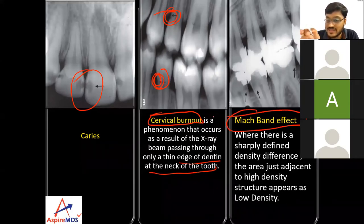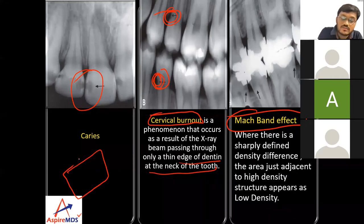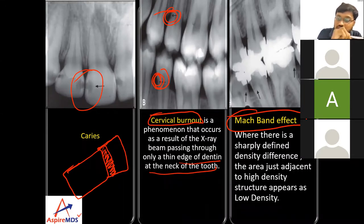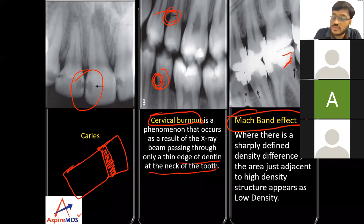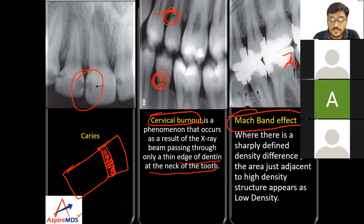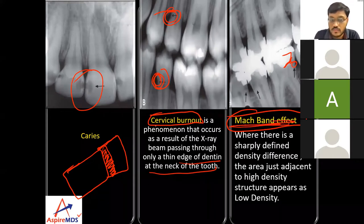The Mach band effect occurs when there is a sharply defined density difference — when a very radiopaque object is associated with a less radiopaque or radiolucent object, the area of the radiolucent object near the radiopaque one appears even more radiolucent. This might appear as caries but it is not. It can be seen near amalgam restorations or between enamel and dentin. Both cervical burnout and the Mach band effect are differential diagnoses for dental caries.